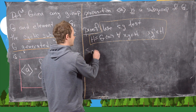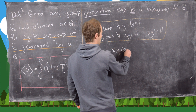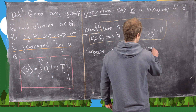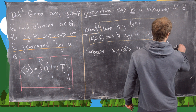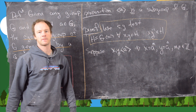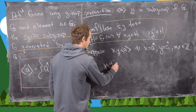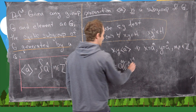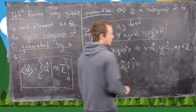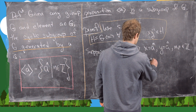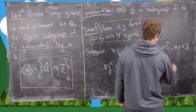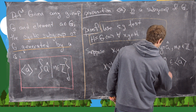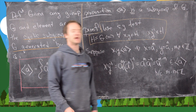Suppose we have two arbitrary elements x and y in <a>. That tells us x equals a to the m and y equals a to the n, where m and n are integers. Now let's calculate x times y inverse. That's a to the m times the inverse of a to the n. By exponent rules, which hold in a group, that gives us a to the m times a to the minus n, which is a to the m minus n. This is an element of our cyclic subgroup <a> because m minus n is an integer.